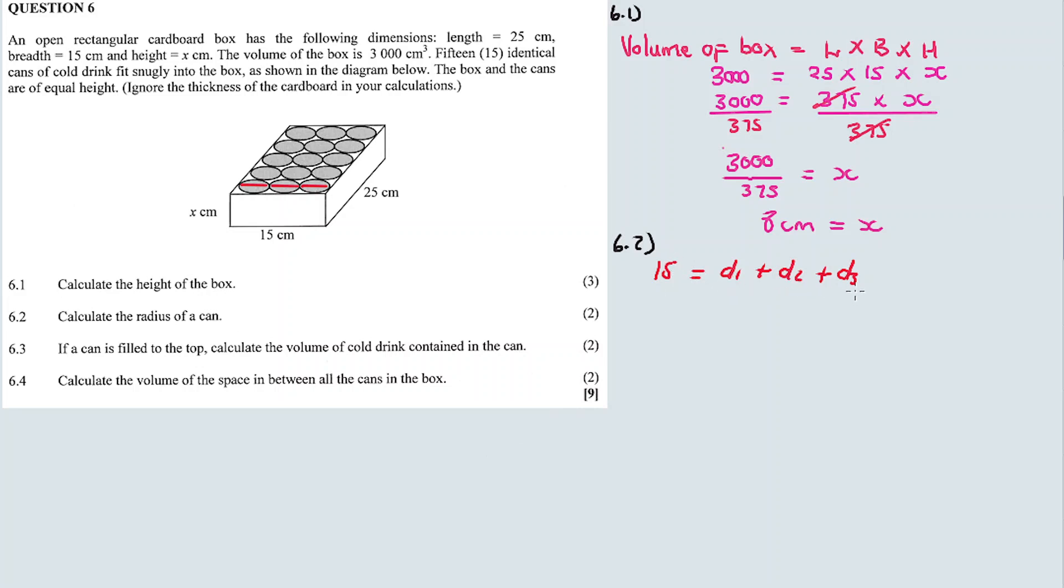So by finding the diameter, we can calculate the radius. The breadth of the box, 15, equals diameter one plus diameter two plus diameter three. Since the cans are identical, instead of saying diameter one, two, three, it's three times the diameter. Therefore, the diameter equals 15 divided by 3, which is 5. But the radius equals diameter divided by 2, so 5 divided by 2 is 2.5. Our answer is 2.5 centimeters.